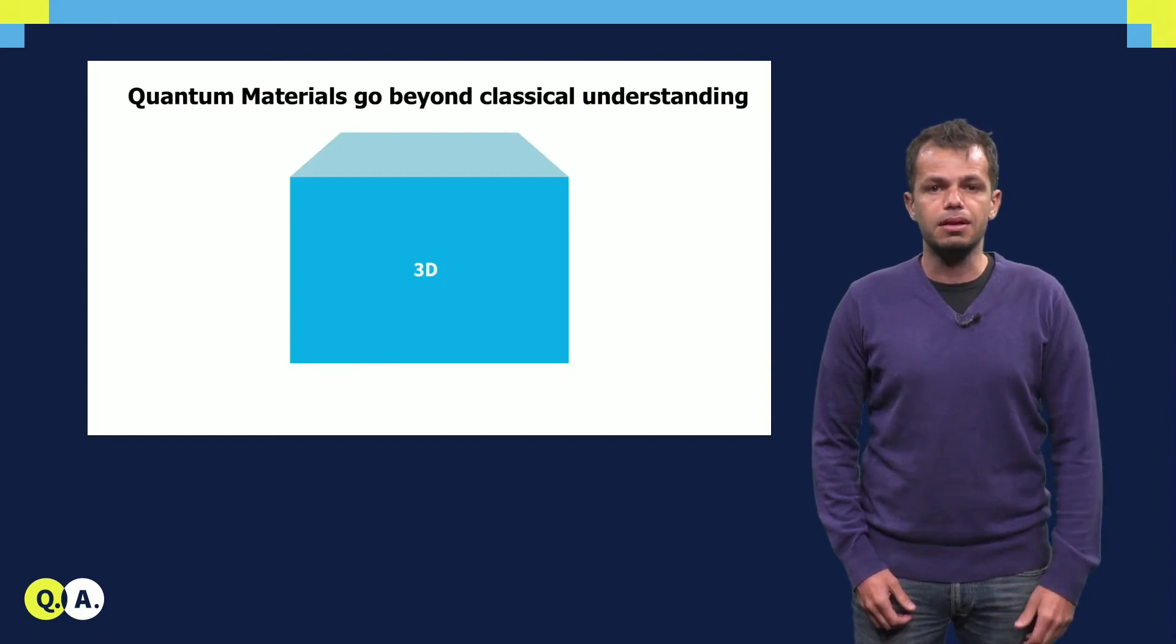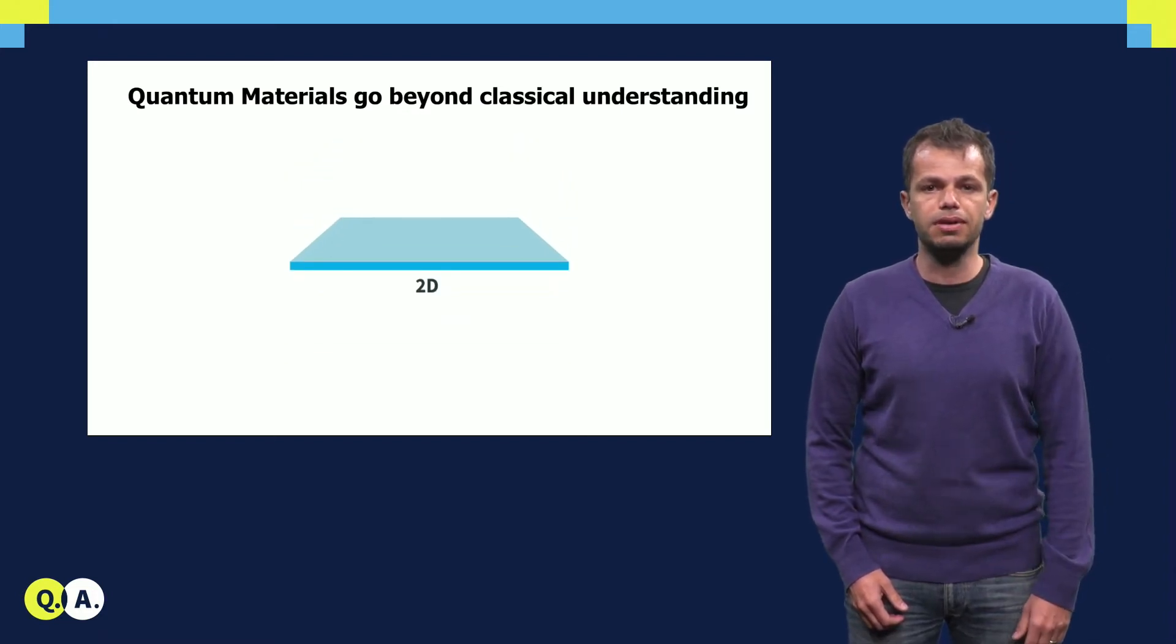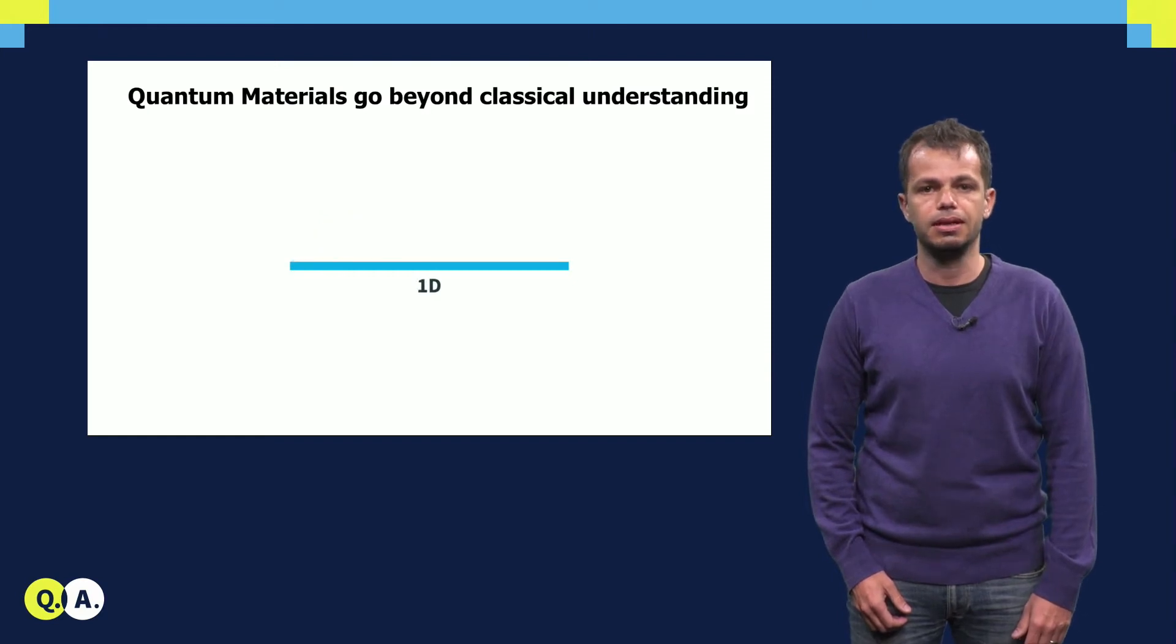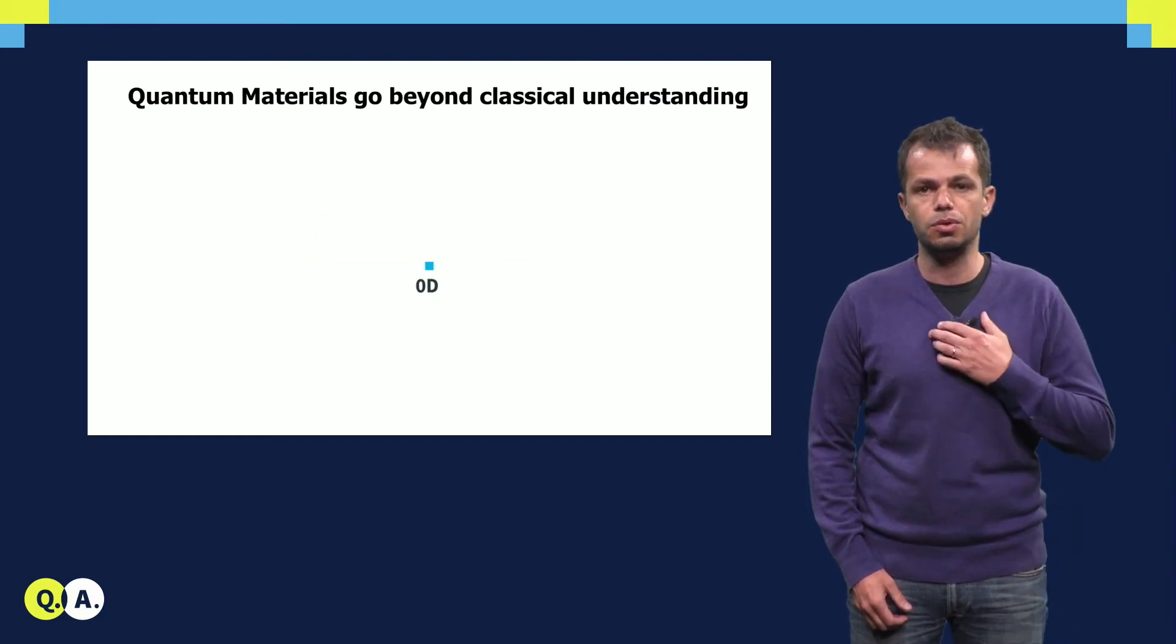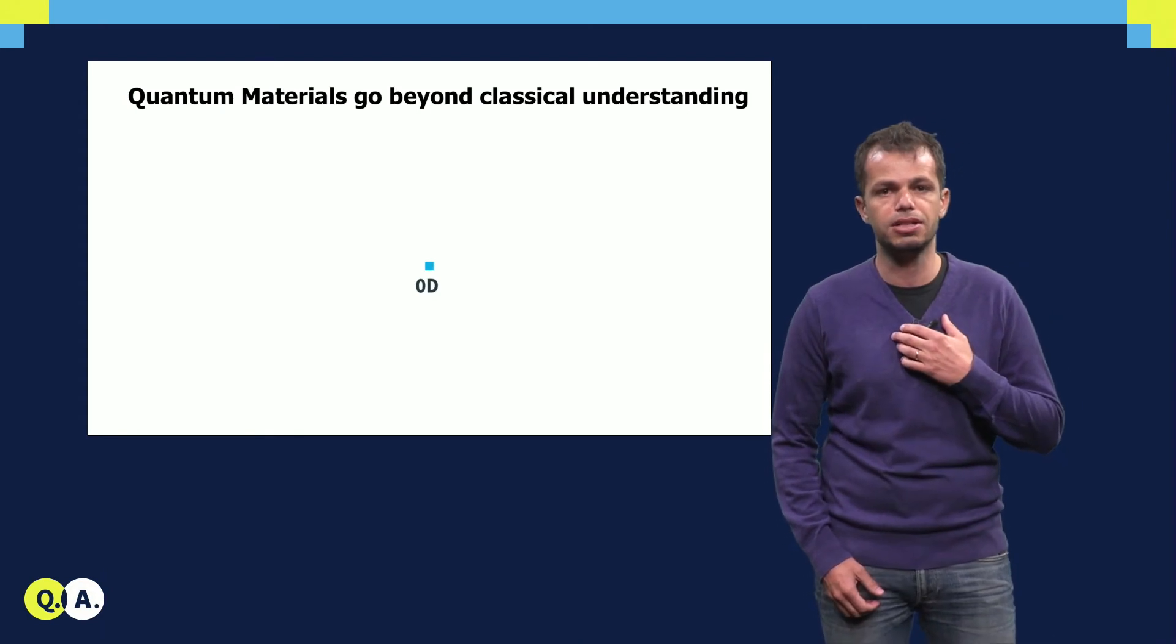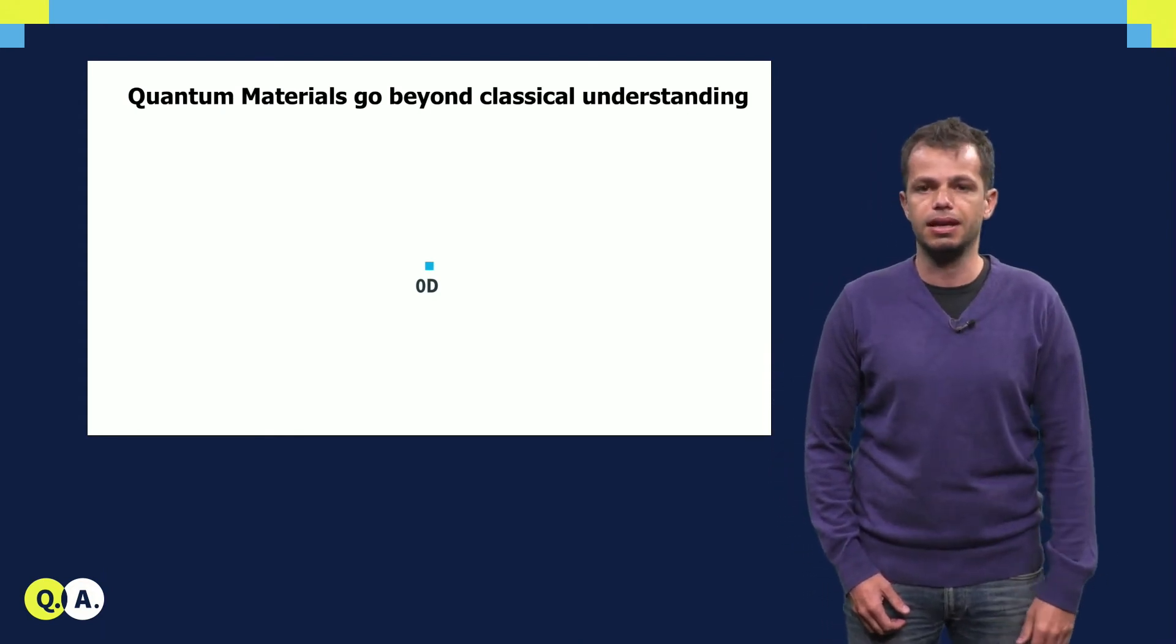For example, many quantum materials derive their properties from reduced dimensionality. Electrons trapped in two, one, or zero dimensions have different characteristics than electrons in 3D.